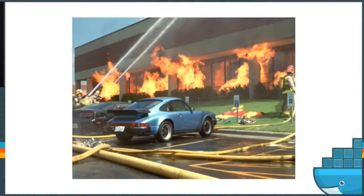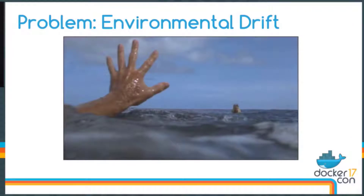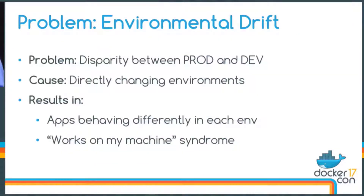To help answer that, I think it helps to understand where Michael went wrong in the first place. Michael's problem was that he was a victim of environmental drift. The production environment he deployed to was not the same as the development environment where he tested his app. This disparity can be caused by updating one environment without pushing the same updates to the rest. Michael can't reproduce the issues locally — that's your 'works on my machine' syndrome.